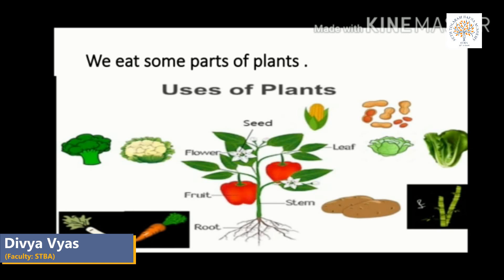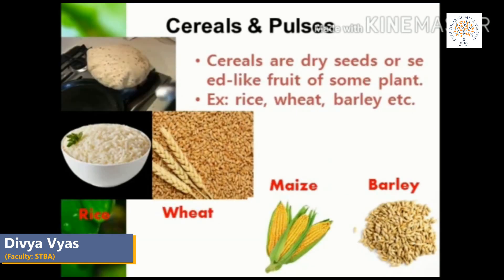Different parts of plants are useful to us in different ways. We get cereals, food items, timber, medicines, paper, rubber, resin and gum from trees. Our first point is food — plants provide food for human beings and fodder for animals. Plants give us a staple diet of rice and wheat, and also pulses and oil seeds.